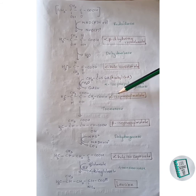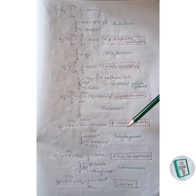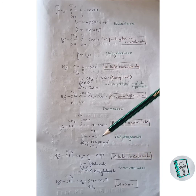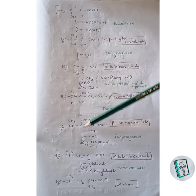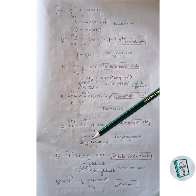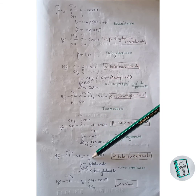Alpha-isopropylmalate undergoes isomerization in the presence of isomerase enzyme to form beta-isopropylmalate. Beta-isopropylmalate then undergoes dehydrogenation and decarboxylation to form alpha-ketoisocaproate: CO2 is removed from the carboxylate group, the freed hydrogen joins the adjacent CH2, and two hydrogens are removed with NAD+ forming a C=O bond.